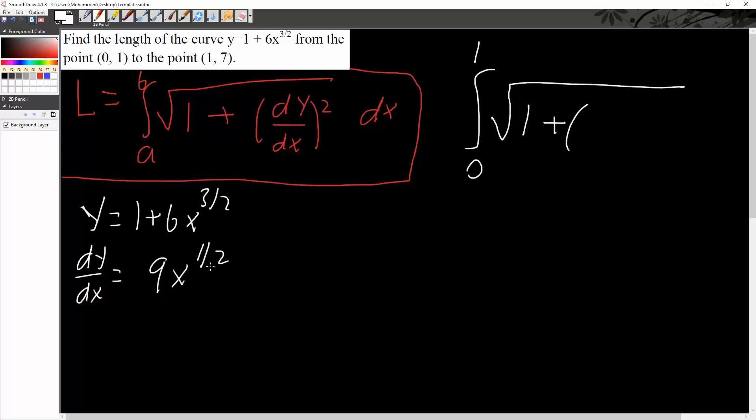And now we simply plug that number in here. So we'll have 9x to the 1 half squared. The formula has squared in terms of dx. And because of that, we will get the integral from 0 to 1 of the square root of 1 plus 81x in terms of dx.